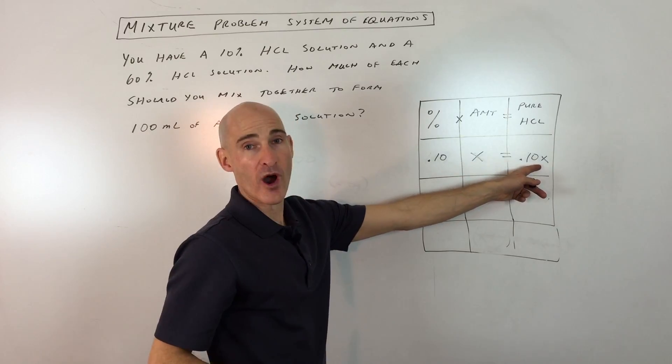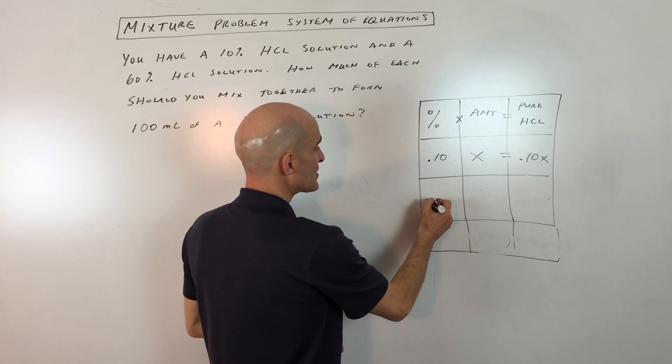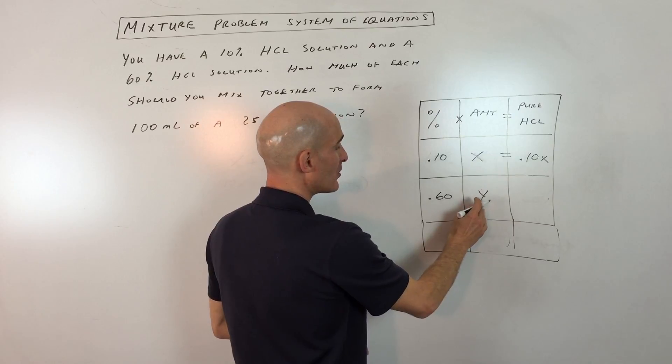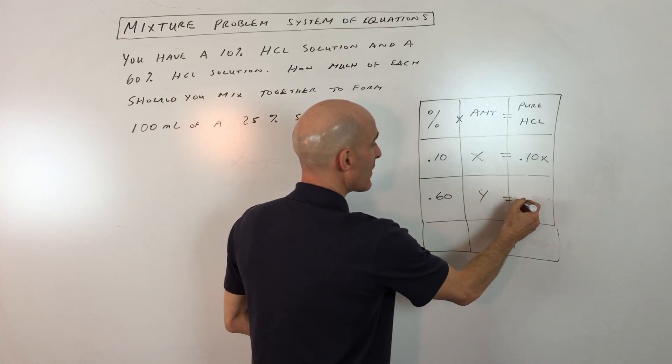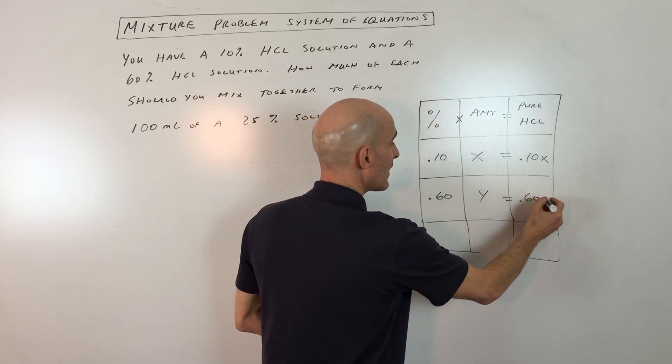The rest of it's going to be water. And then the 60% solution, you've got 0.60 times Y milliliters. And that's going to give you the amount of pure hydrochloric acid.